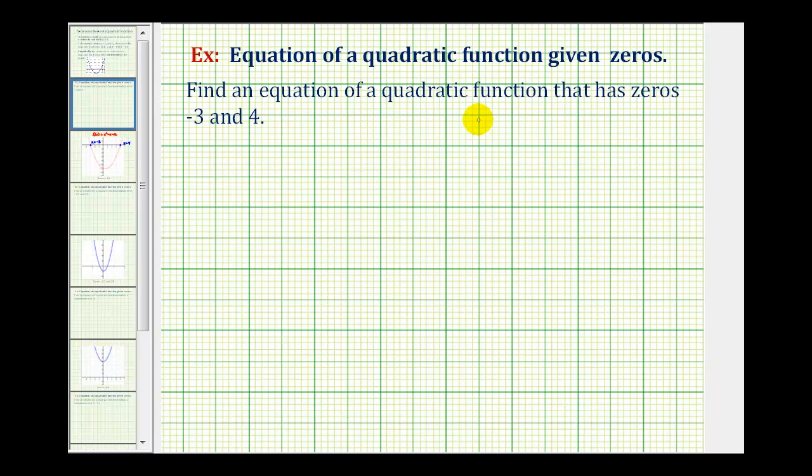We want to find an equation of a quadratic function that has zeros negative three and positive four. Before we do this, let's start with a quick review.